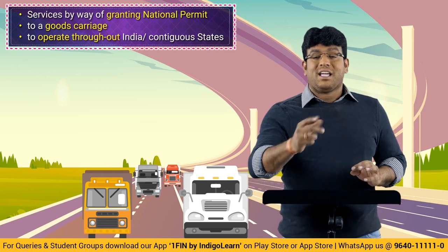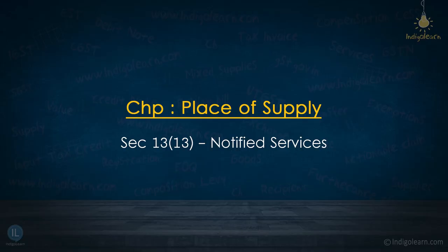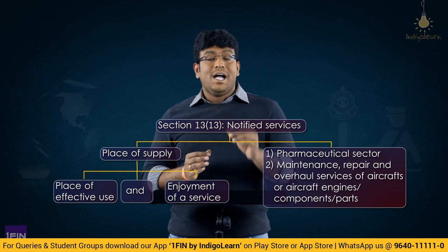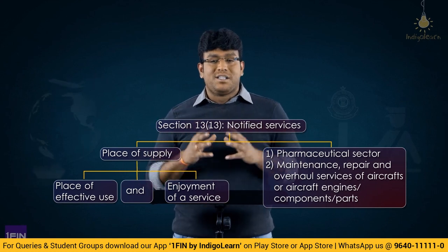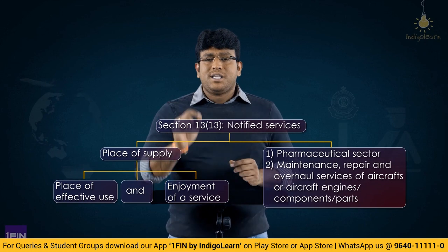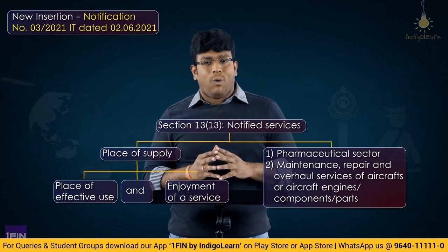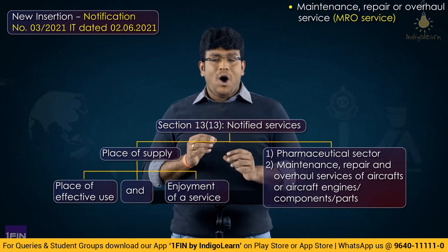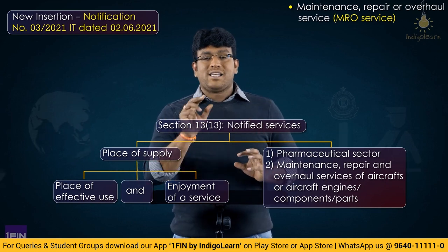The next amendment is in the topic of place of supply, Section 13(13) — notified services. As per Section 13(13), in respect of certain notified services, place of supply will be the place of effective use and enjoyment of a service. By virtue of Notification No. 3/2021 dated 2nd June 2021, one new point has come up dealing with maintenance, repair, or overhauling (MRO) service in respect of ships.